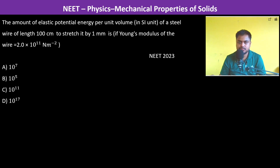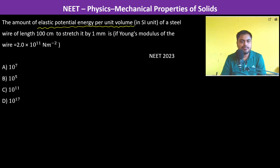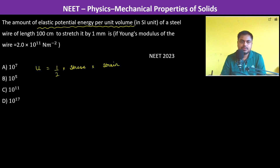The amount of elastic potential energy per unit volume of a steel wire to stretch it by one millimeter is — elastic potential energy per unit volume is given by half into stress into strain.